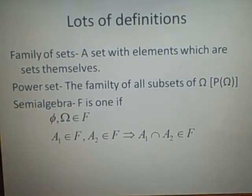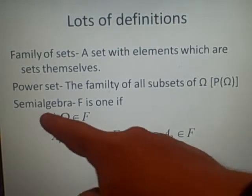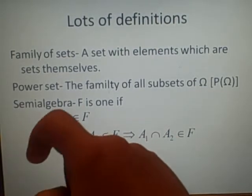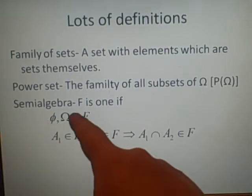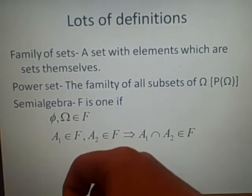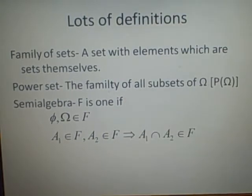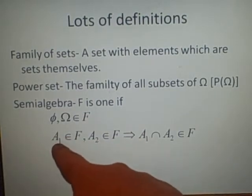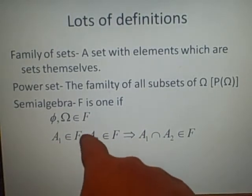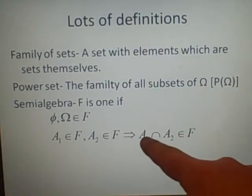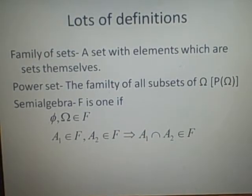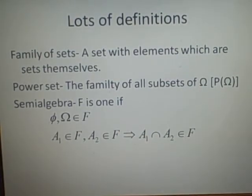Another definition is the semi-algebra. F is a semi-algebra if the empty set and Ω are elements of F. These are your definitions, and you'll be asked to prove them with certain numbers, which I've got an example of in a minute. And also, if A₁ is an element of F and A₂ is an element of F, then A₁ intersect A₂ is an element of F. And that's a semi-algebra.